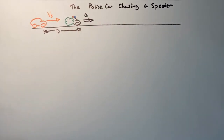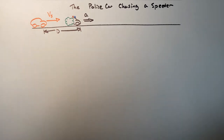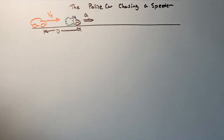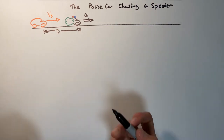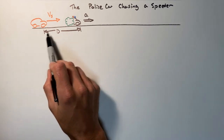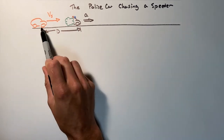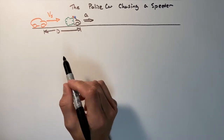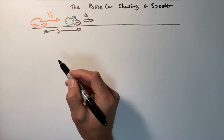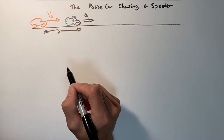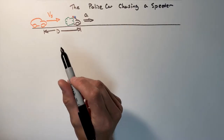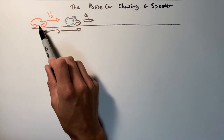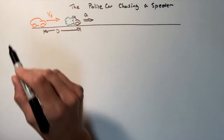At some rate a, the whole goal of this problem is to figure out when the police car is going to catch the speeder — so we're looking for time. Ultimately, we want to find the time when the positions of these two vehicles are the same. We're going to use the kinematic equations and apply those equations to each individual car.